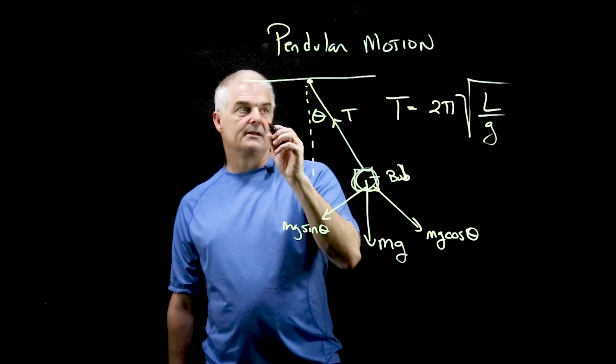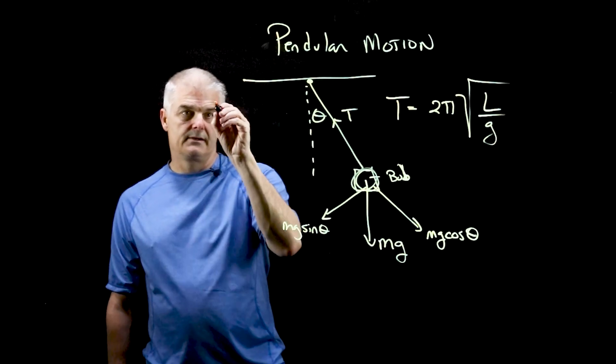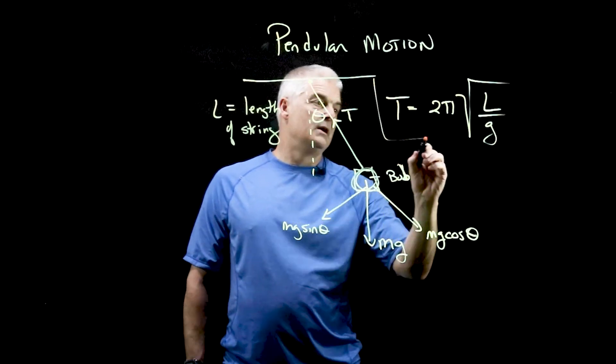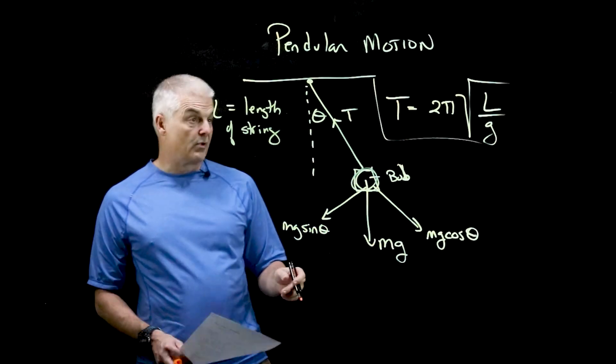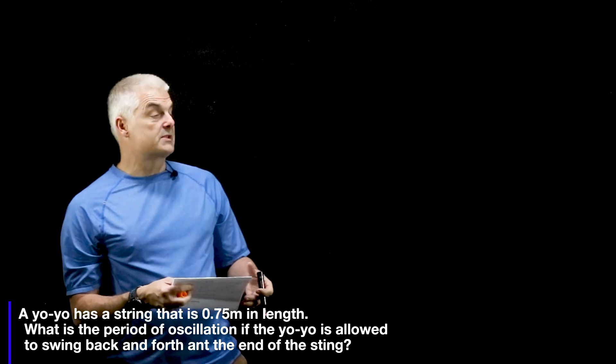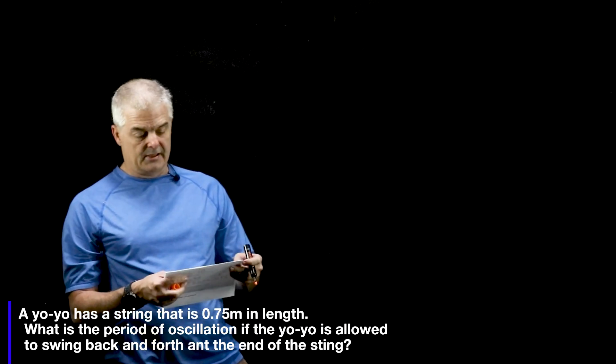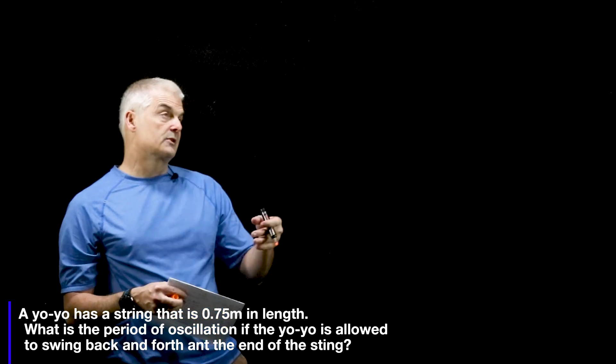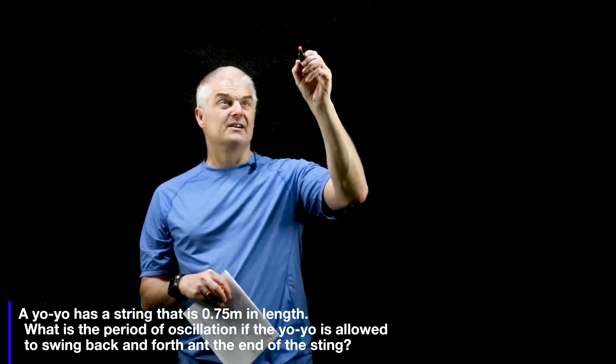Now, I'm going to make sure L is the length of the string. L is the length. And from there, we can do a number problem. So we've got a problem right here. A yo-yo is a string with 0.75 meters. What is the period of oscillation of the yo-yo if it swings back and forth? So all they're giving us is L.